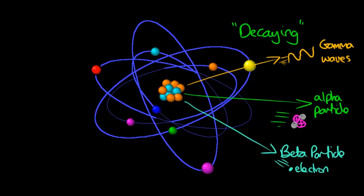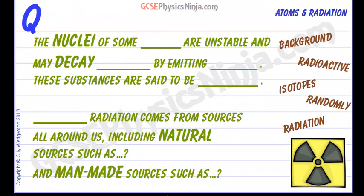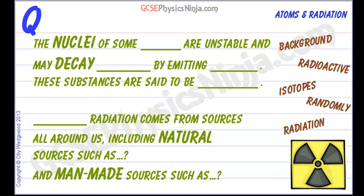So let's have a look at this flashcard and see if we can make sense of the gaps. The nuclei of some isotopes—remember isotopes, an isotope is an element which has the same number of protons but different number of neutrons—but the nuclei of some of these isotopes are unstable and may decay randomly.